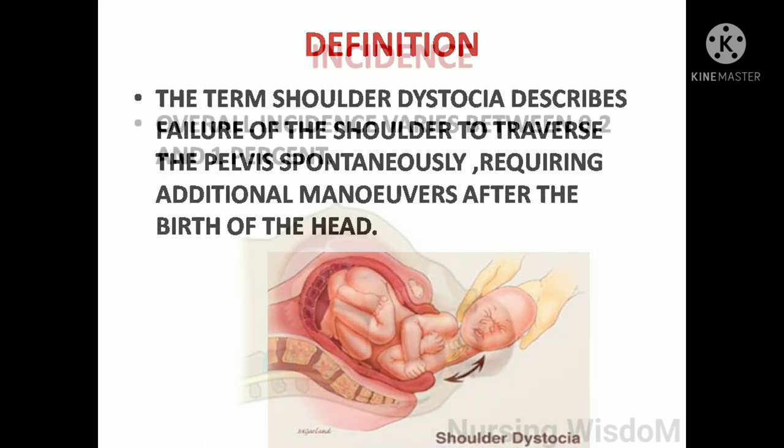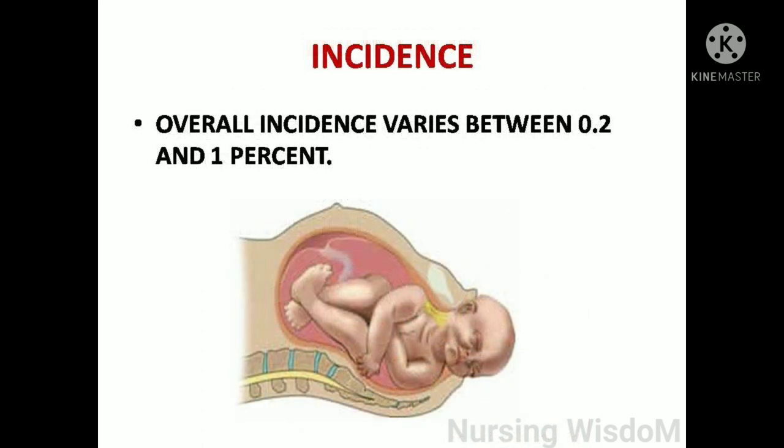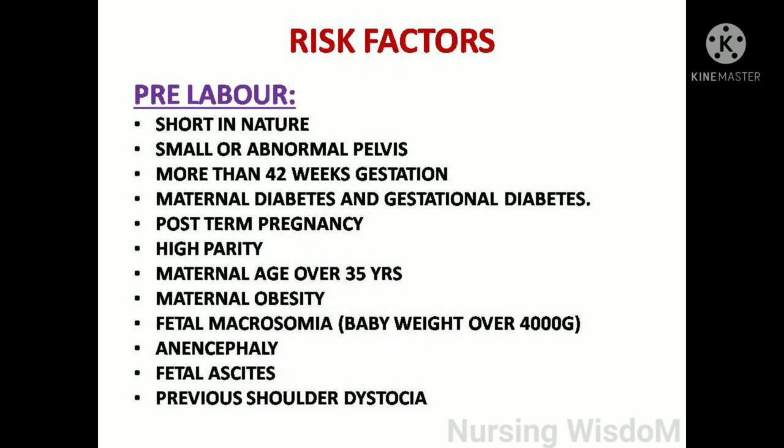The overall incidence varies between 0.2 and 1 percent. Risk factors during pre-labor include short stature, small or abnormal pelvis, more than 42 weeks gestation, maternal diabetes and gestational diabetes, post-term pregnancy, high parity, maternal age over 35 years, maternal obesity, fetal macrosomia (baby weight over 4,000 grams), anencephaly, fetal ascites, and previous shoulder dystocia.